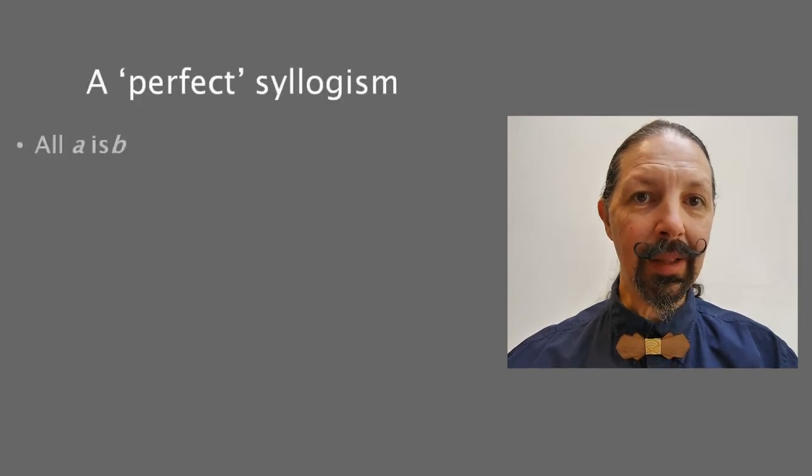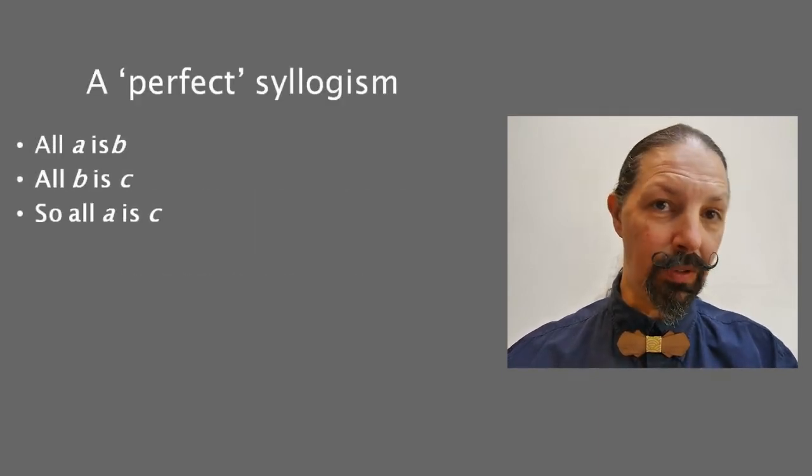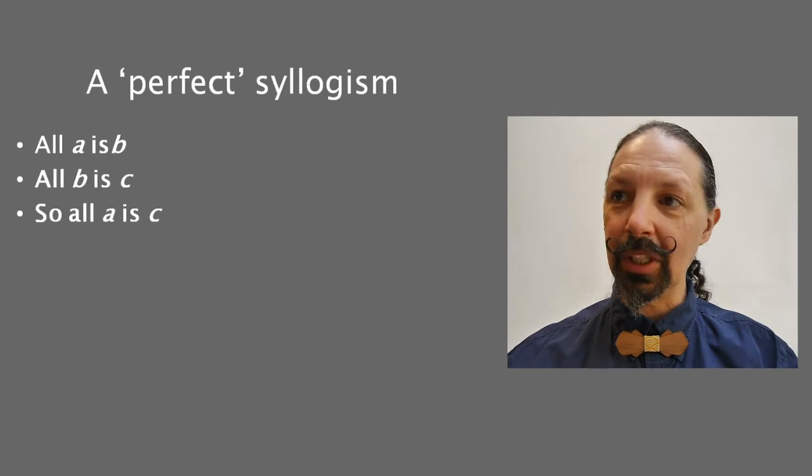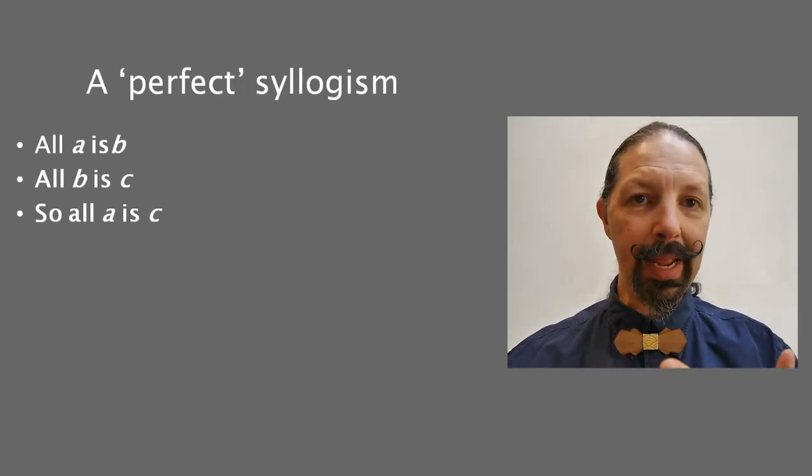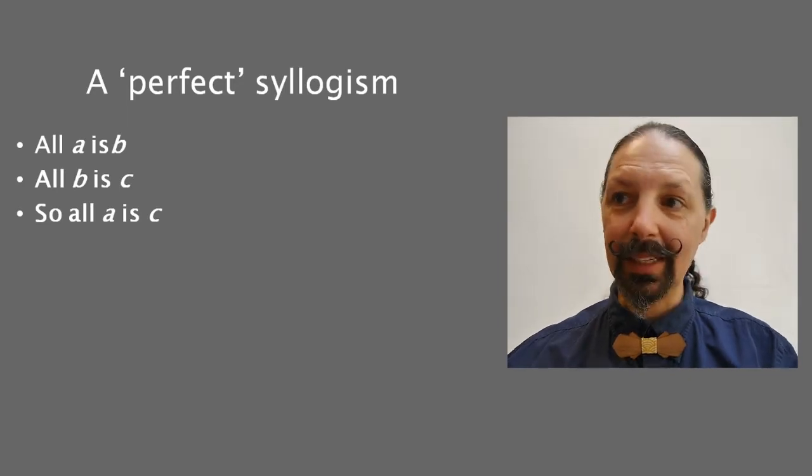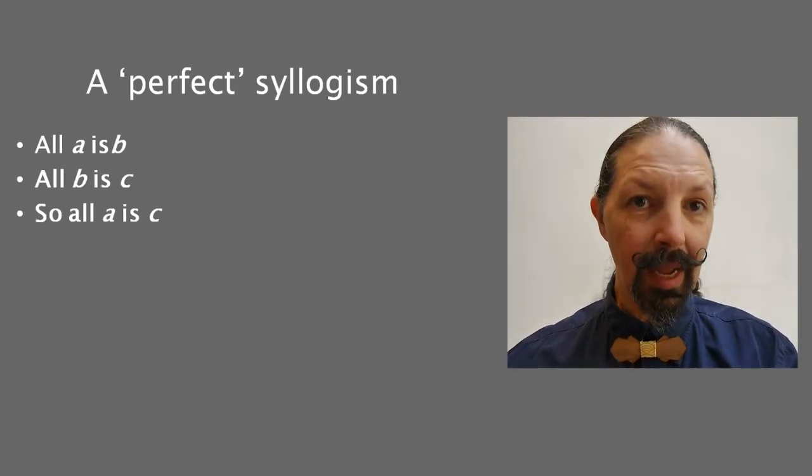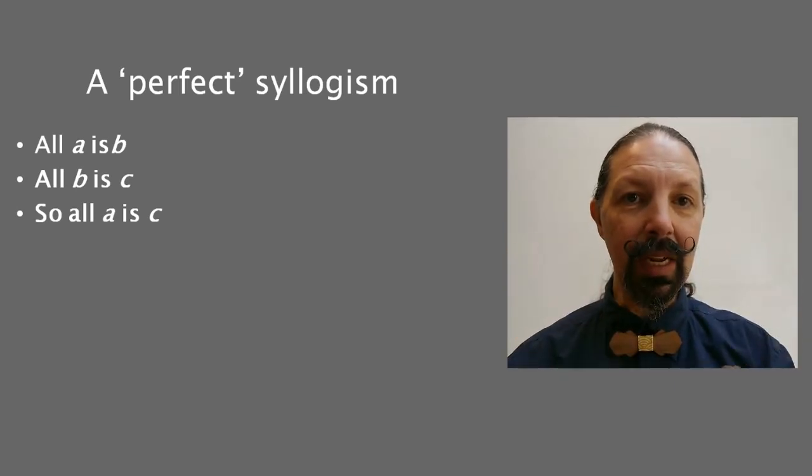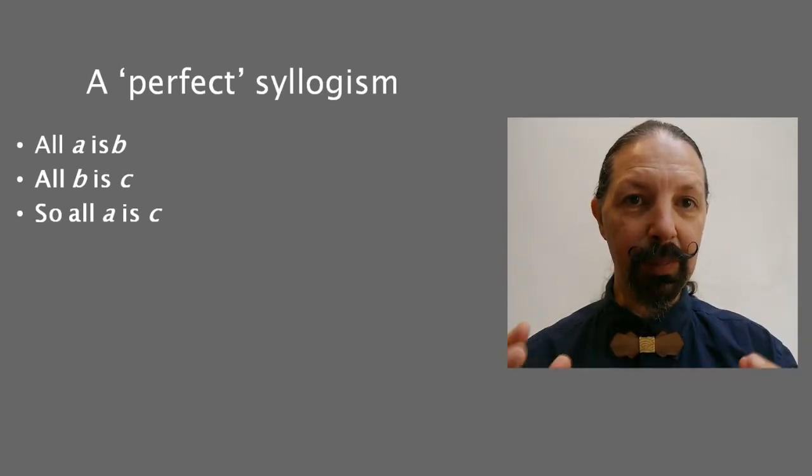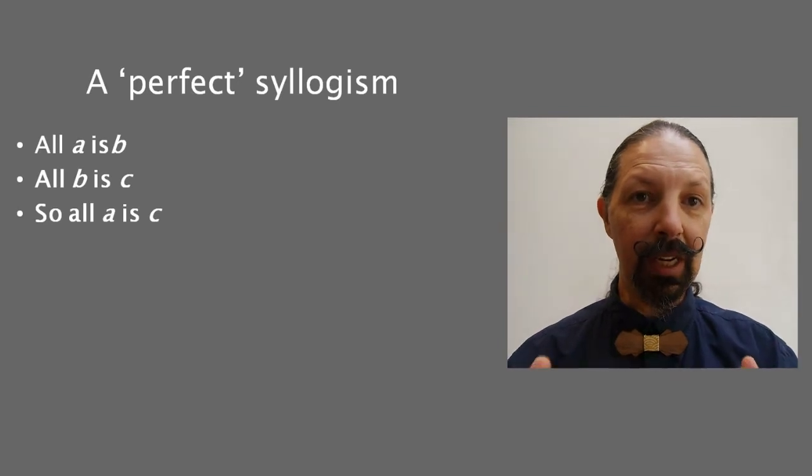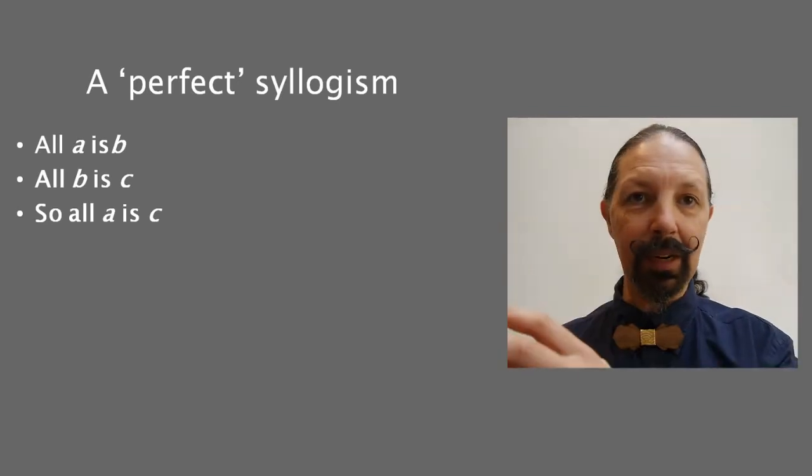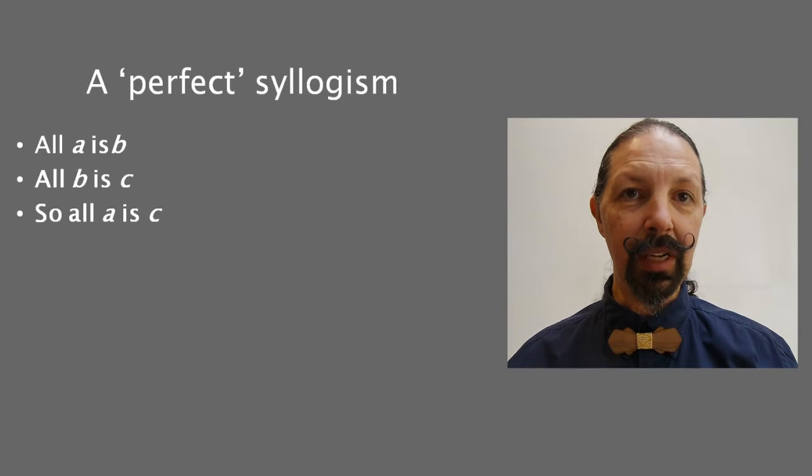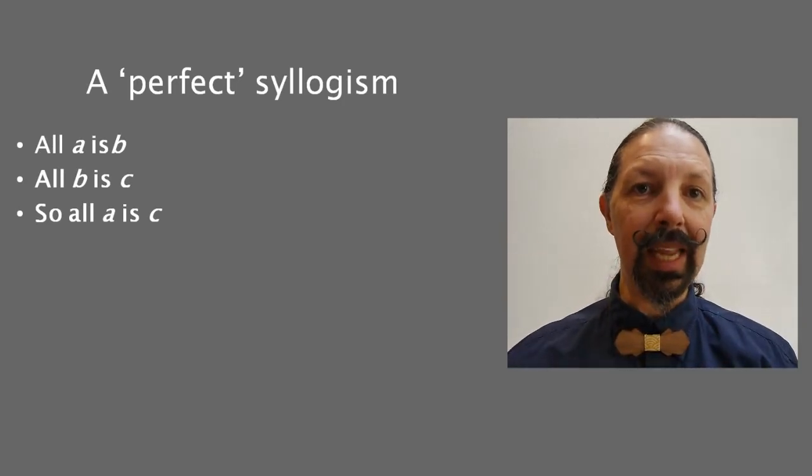Let's take what Sister Miriam Joseph calls a perfect syllogism. All A is B, all B is C, so therefore common sense says that all A is C. Now she calls it a perfect syllogism because it has three universal positive propositions. A universal positive proposition is when you say all of something is something else. There's nothing left out. It's as near universal as you can get.